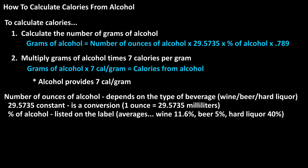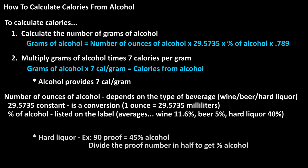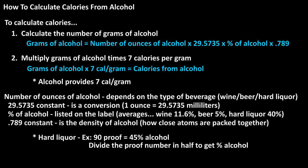One note for hard liquor: if the label says 90 proof, this means 45% alcohol. So just divide the proof number in half to get the percentage of alcohol. The last constant in the formula, 0.789, is the density of alcohol, which basically means how closely its atoms are packed together.